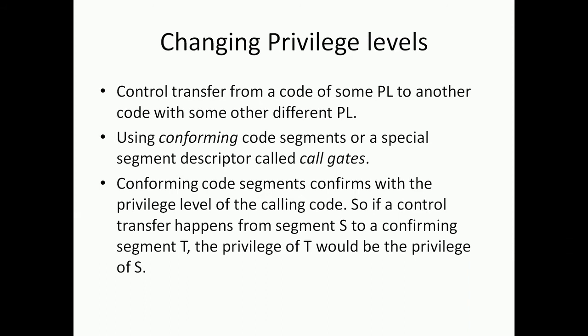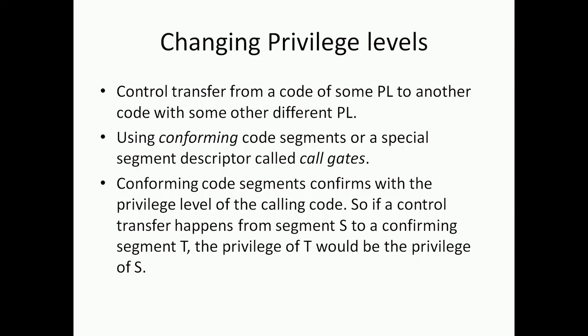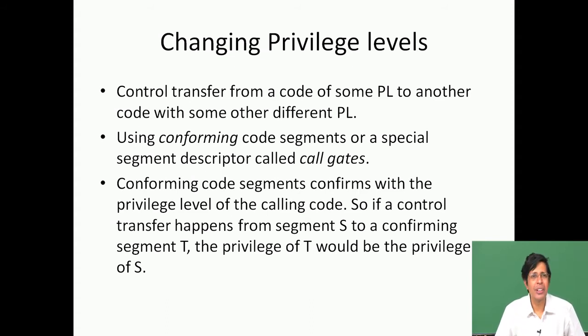If a control transfer happens from a privilege segment S to a confirming segment T, the privilege of T will be the privilege of S. T will start executing as if it is a privilege level 3 code. If you are privilege level 3 and you call a confirming code, it will start dancing to your tune. If you are privilege level 2, it will start dancing to that level. I leave it as a simple exercise to find out where confirming code segments become important.